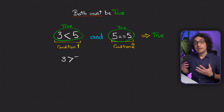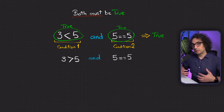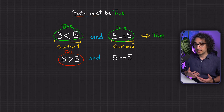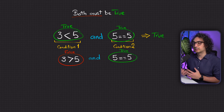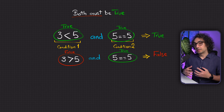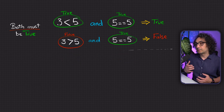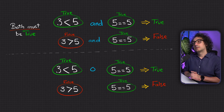Now let's take another two conditions: is three greater than five, and is five equal to five? Python evaluates each condition separately. The first one is false — three is not greater than five. The second is true. But because we're using the 'and' operator, both conditions must be true. We have one false and one true, so we get false in the output.